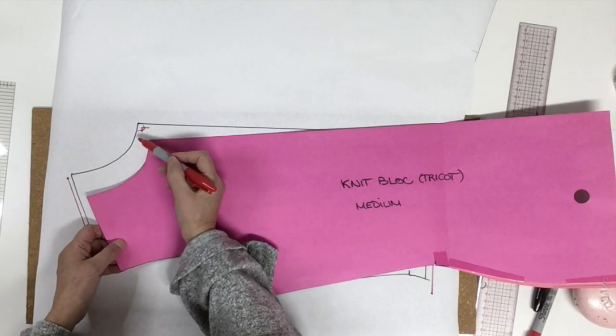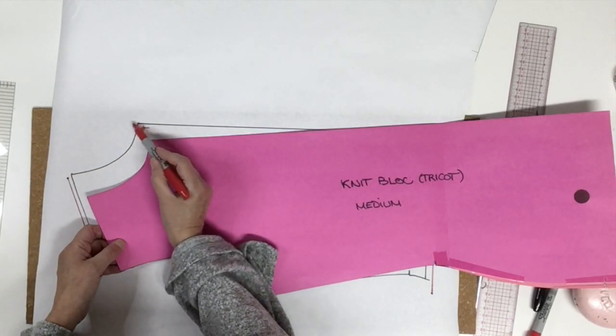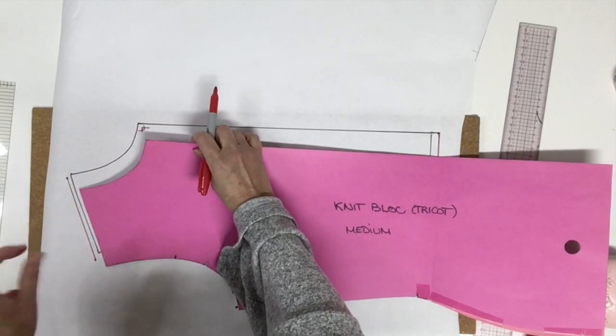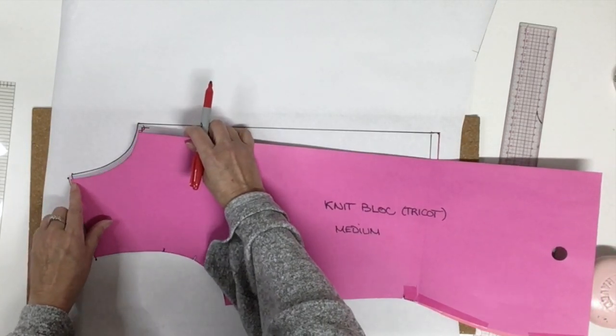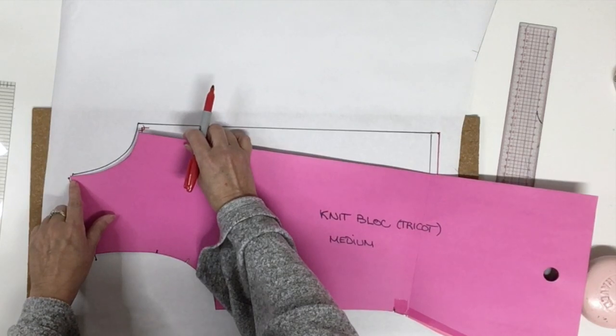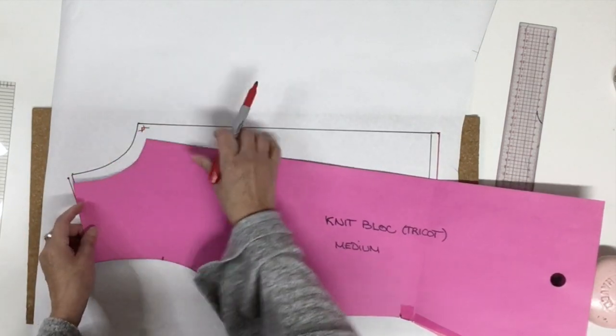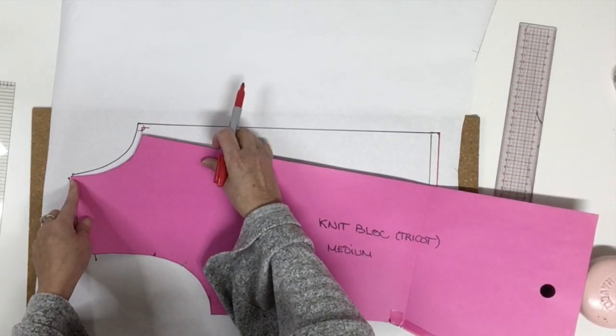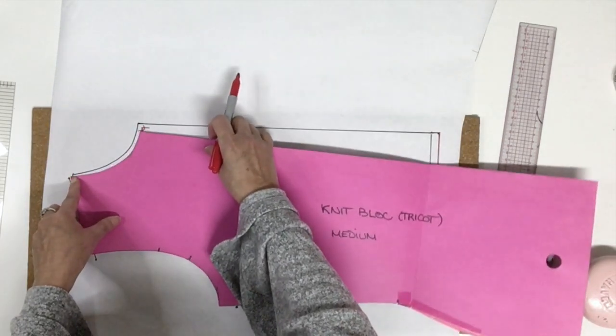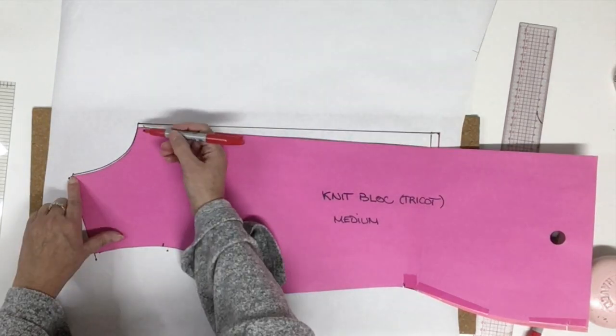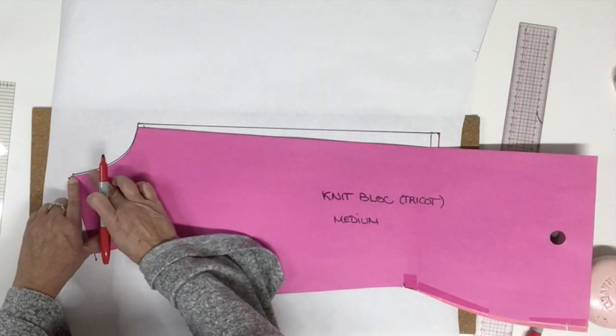So when we trace the new line, we don't touch the first part. Now to trace the curve we'll do it in two steps. First we're going to place the corner right in the middle of the basic size and the new size, right in the middle, and pivot until it just touches the line. Now we're going to trace more or less half of the distance.